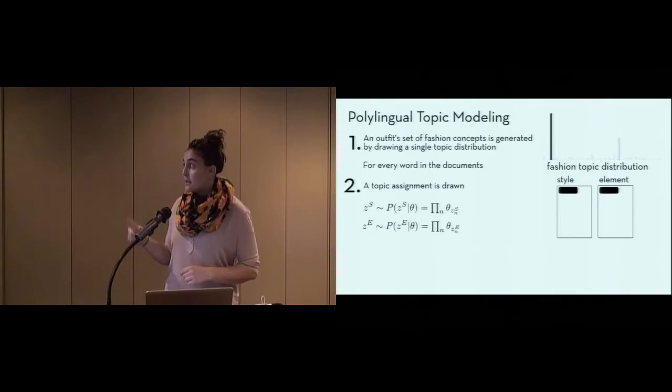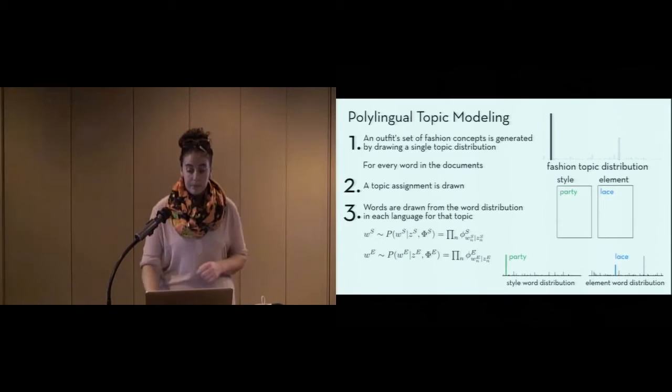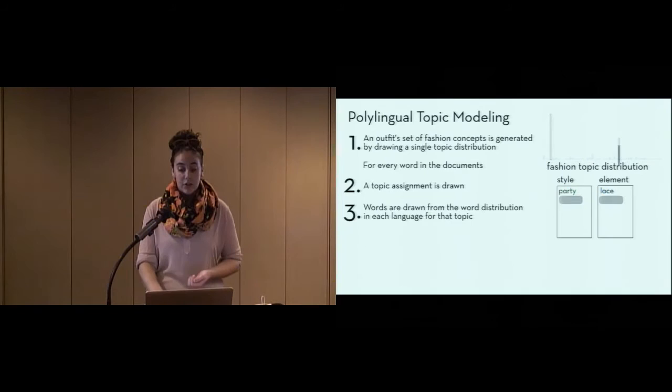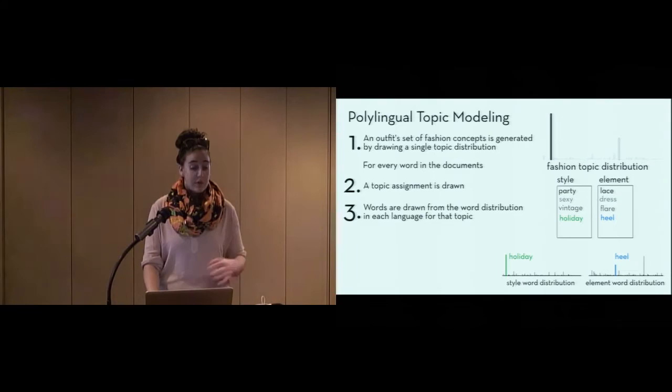And then, for each language, there's a word distribution for that topic, drawn from a Dirichlet with parameter beta. So you draw an actual word for each document from the word distribution in that language, and this process repeats, drawing topics and words successively for each of the languages, style and element, until the full document is created in each of the languages for that outfit. And similarly, for any other outfit.